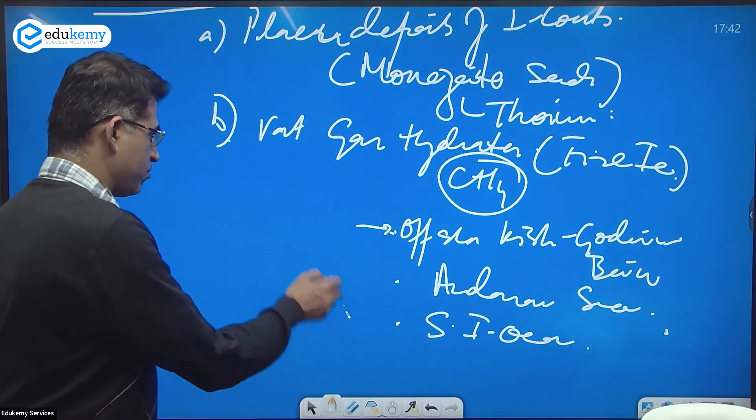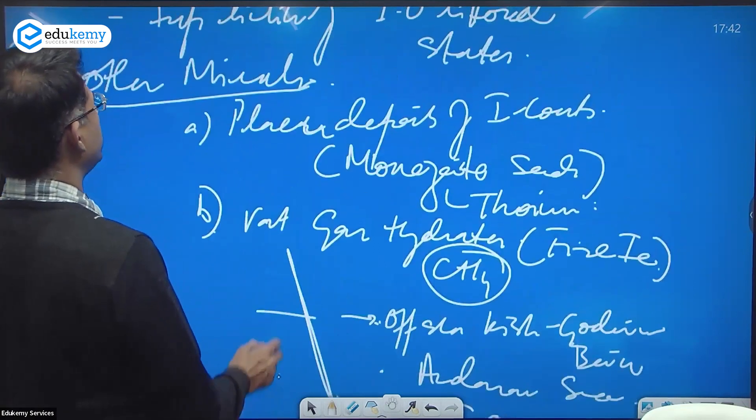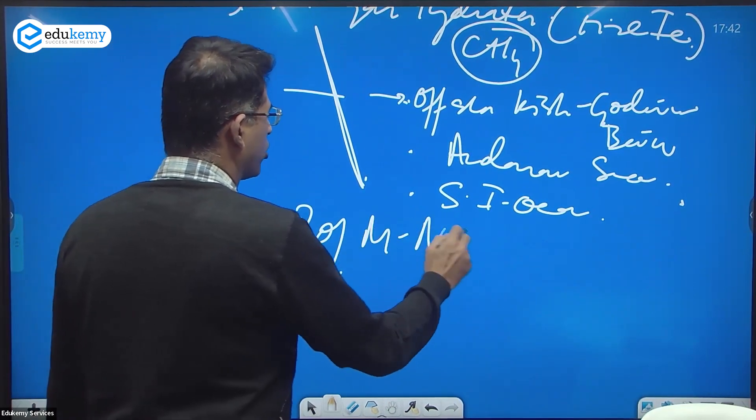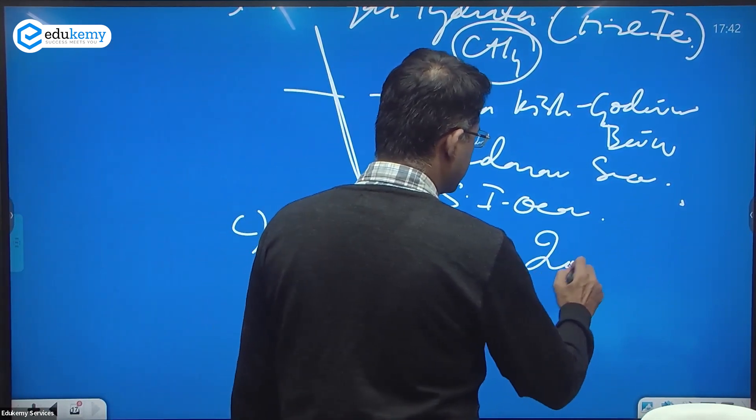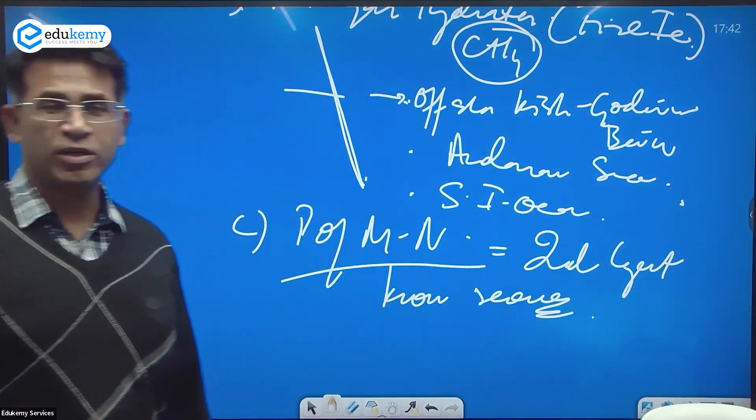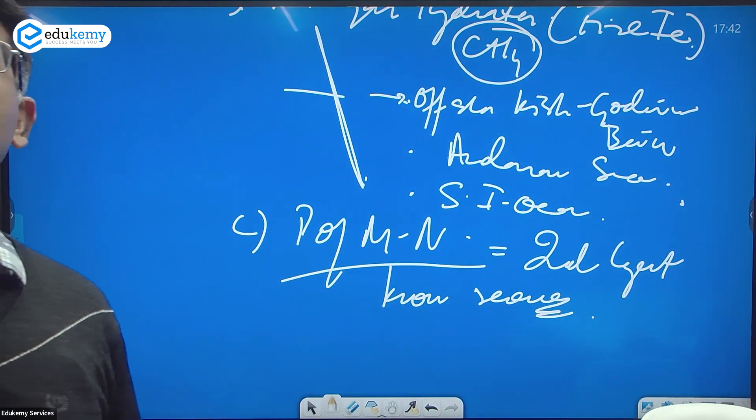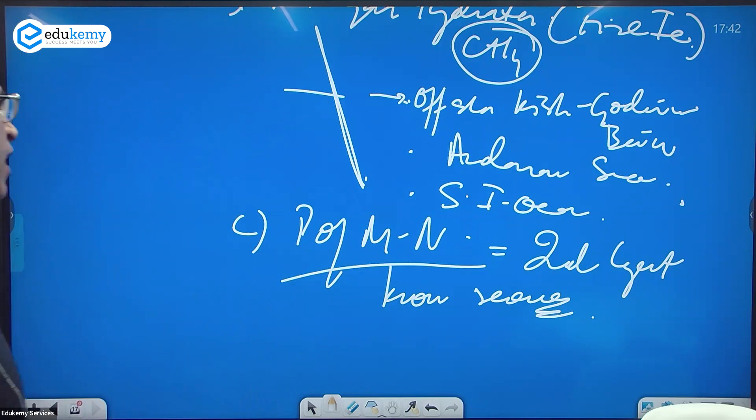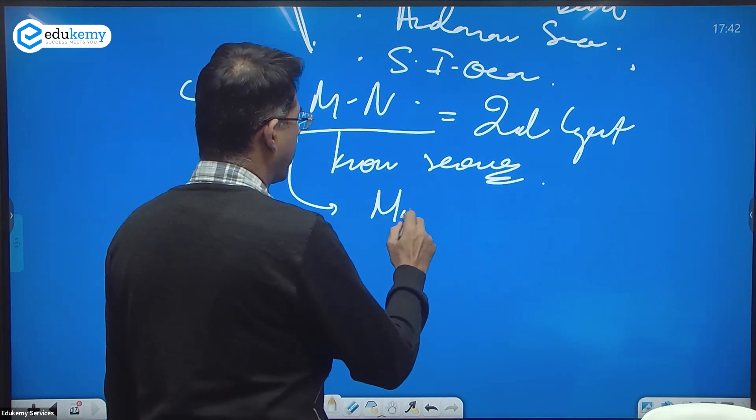Other minerals include polymetallic nodules. Indian Ocean has the second largest known reserves, the largest reserves are off North America coast in Pacific around Hawaiian Islands.